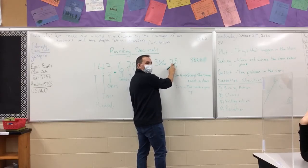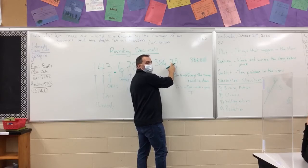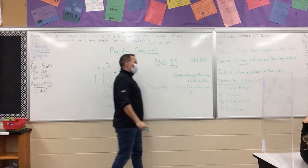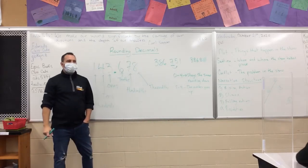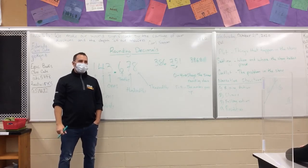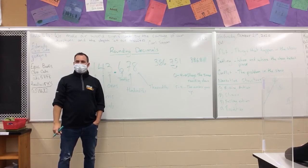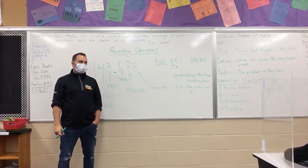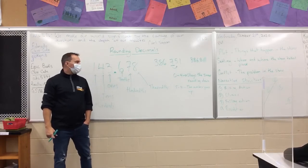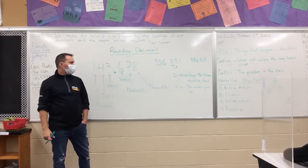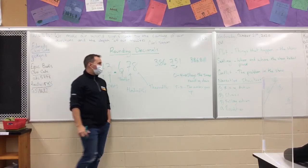5 means I have to take that tenth up to the next number. What if I'm rounding to the nearest hundredth? What does this number become if I'm rounding to the nearest hundredth? Cruz? 386.75.